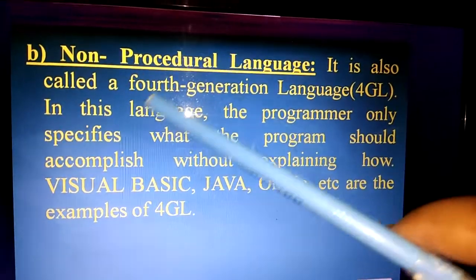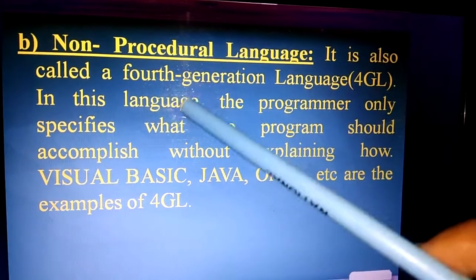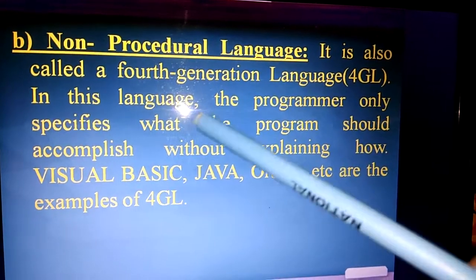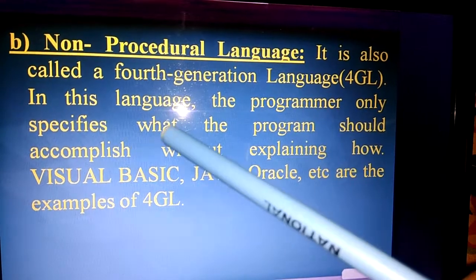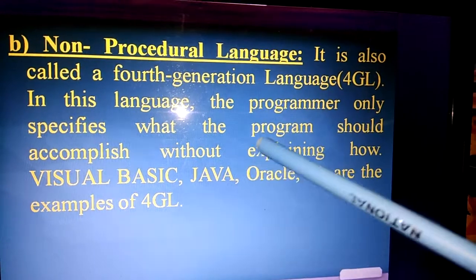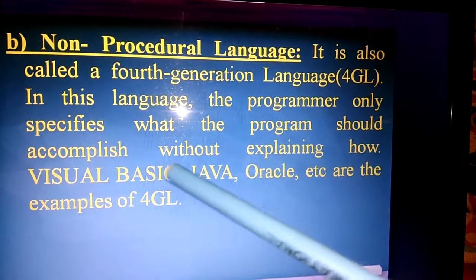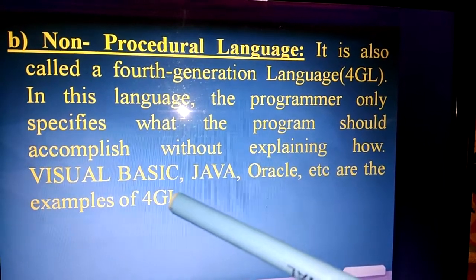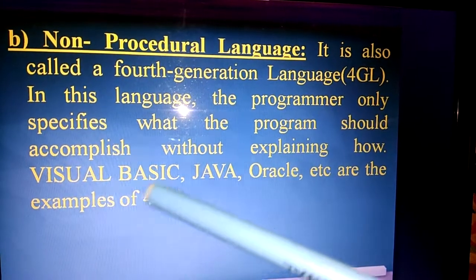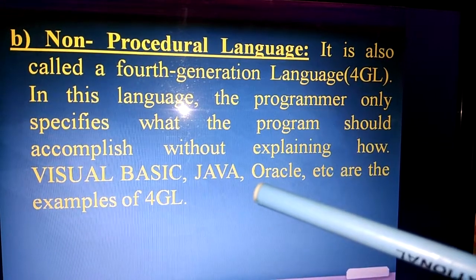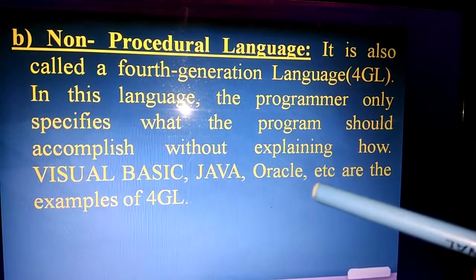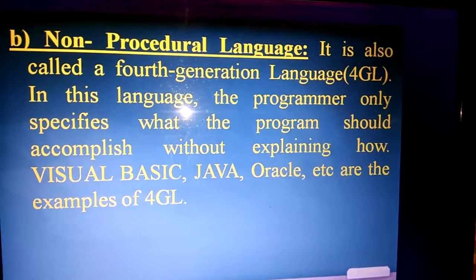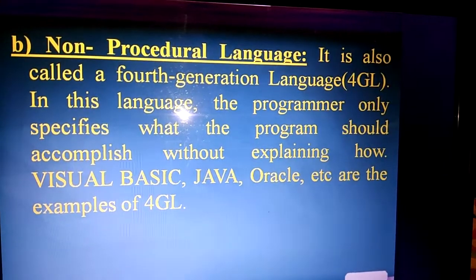Non-procedural language is also called fourth generation language (4GL). In this language, the programmer only specifies what the program should accomplish without explaining how. Visual Basic, Java, and Oracle are examples of fourth generation non-procedural language.